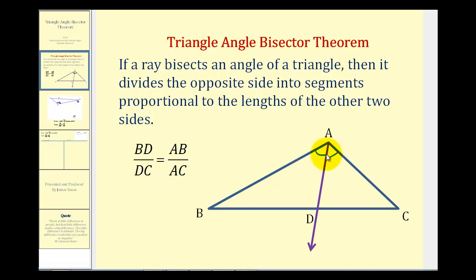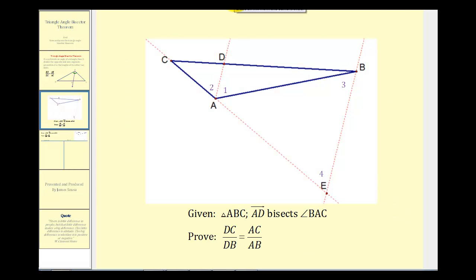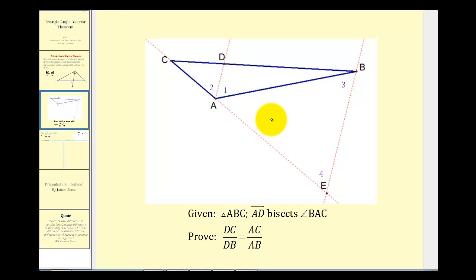Now before we prove this, let's talk about a strategy. The key to making this proof work is by constructing a parallel line — line BE — that is parallel to the angle bisector AD. If we do this, we can gather some important information in order to prove the triangle angle bisector theorem.